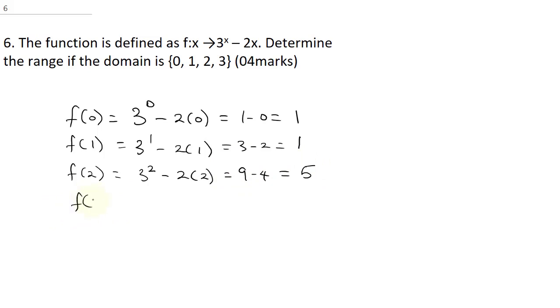Then when you find f of 3, this is going to be 3 raised to the power of 3 minus 2 times 3, which will be 27 minus 6. And that will give us 21.